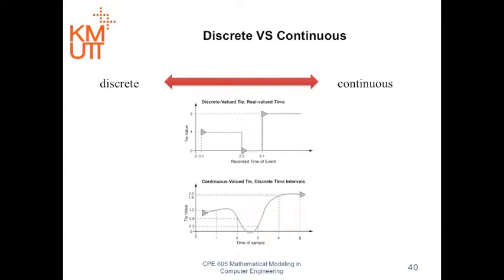The model can be discrete, meaning that it works on a discrete level. Or it can be continuous. That is, it works with a continuous data.